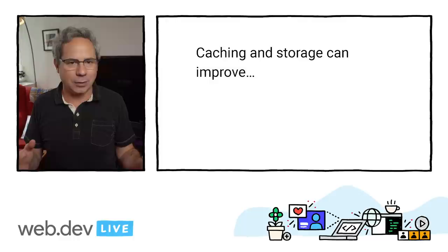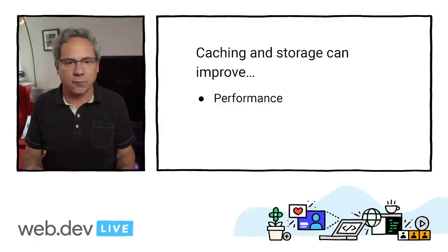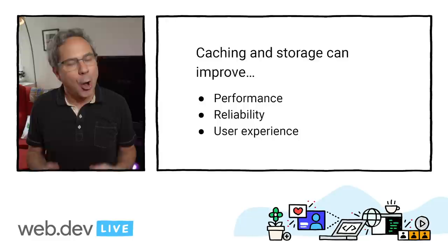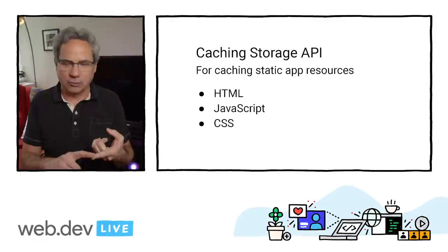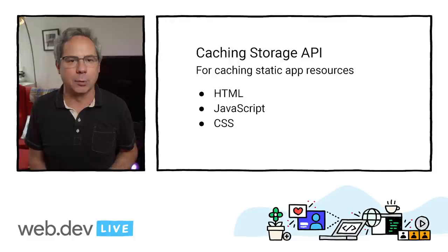Modern storage makes it possible to store more than just small chunks of data on the user's device. Even in perfect wireless environments, caching and other storage techniques can substantially improve performance, reliability, and most importantly, the user experience. With the Cache Storage API, you can cache your static app resources like HTML, JavaScript, and CSS, ensuring that they're always instantly available.